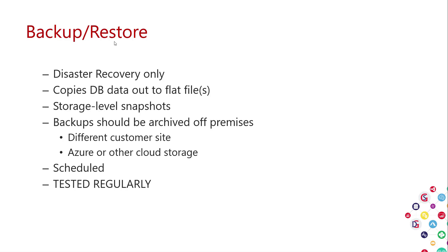Backup/restore is for disaster recovery only — you're copying your data out to flat files. You can also have storage-level snapshots, which are virtually instantaneous and take an image of each volume. Some systems allow synchronized snapshots of multiple volumes, giving you a consistent picture of a database spread across volumes. Backups should always be archived off-premise so you can access them even if your primary site is down.